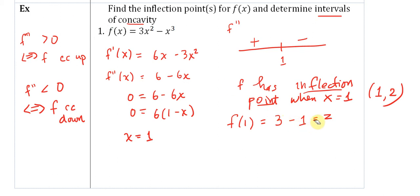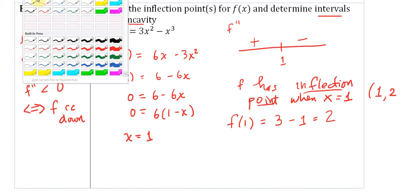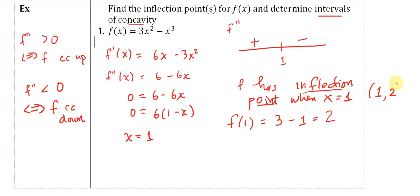Let me correct my ridiculous handwriting here. I'll draw the graph of this in just a minute so you can see. We also know that to the left of 1, f is concave up, and to the right of 1, f is concave down.